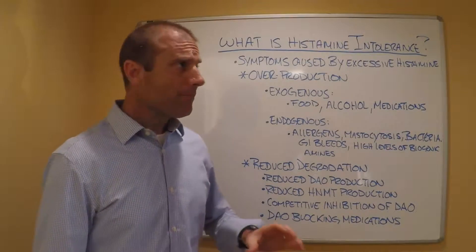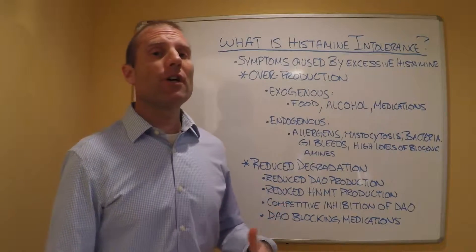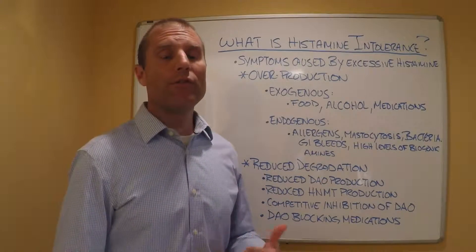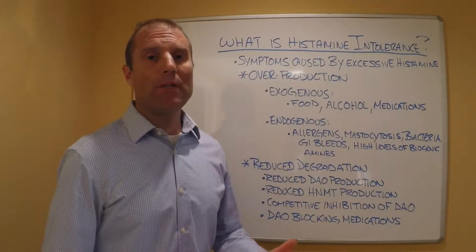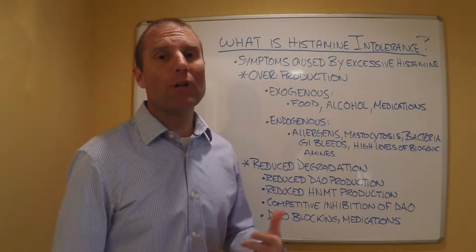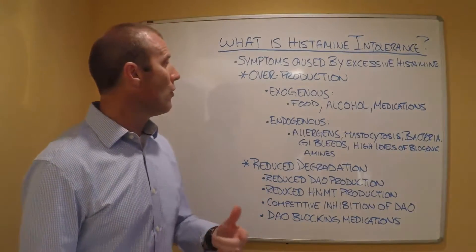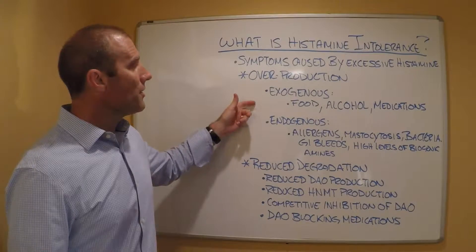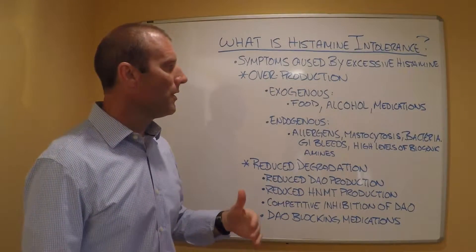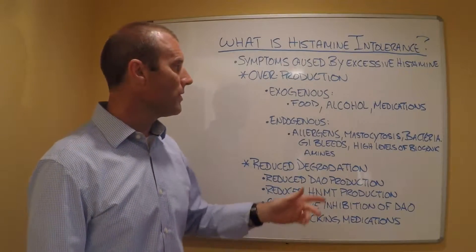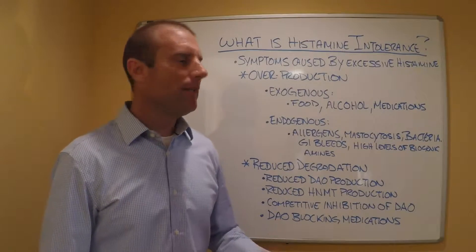To summarize: histamine intolerance is caused by either an overproduction of histamine, an inability to break it down, or most likely a combination of both. Overproduction can have exogenous causes — food, alcohol, and medication — or endogenous causes such as allergies, mastocytosis, bacteria, GI bleeds, and high levels of other biogenic amines.